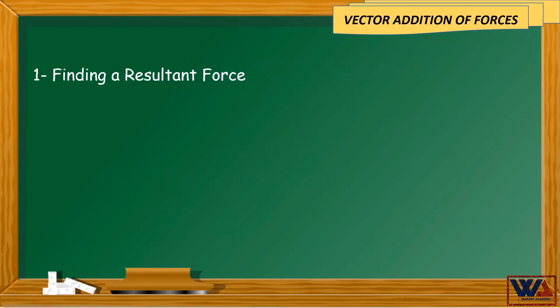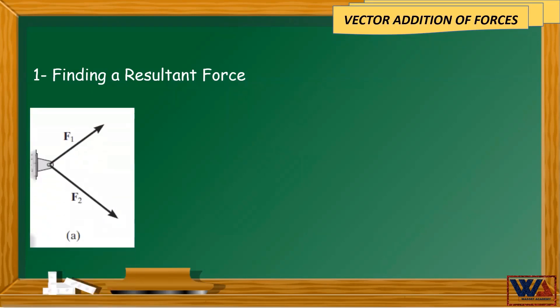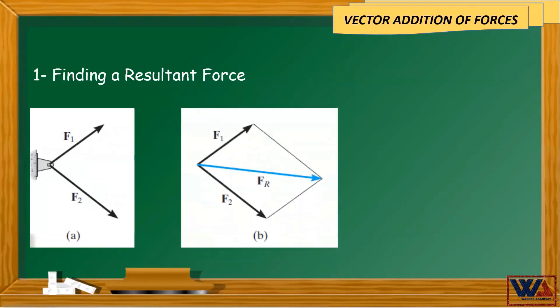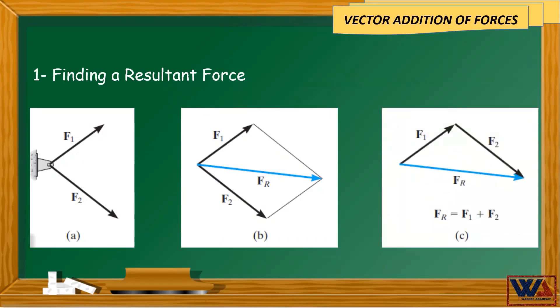To find the resultant force, we can use either the parallelogram law or the triangle rule. In this example, we have the two force vectors F1 and F2 as shown in figure A. To get the resultant force FR, we can use the parallelogram law as shown in figure B, or use the triangle rule as shown in figure C.